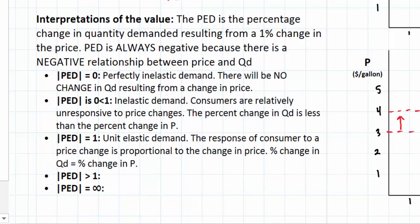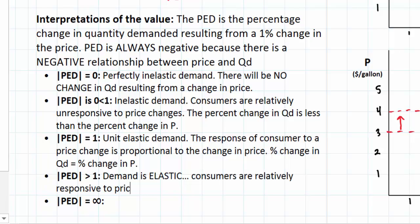Let's move on to a PED coefficient of greater than 1 such as that for our McDonald's Big Macs. This is a situation in which demand is elastic. In other words, consumers are relatively responsive to price changes. Goods that have lots of substitutes or goods that are not deemed to be necessities tend to have relatively elastic demand.